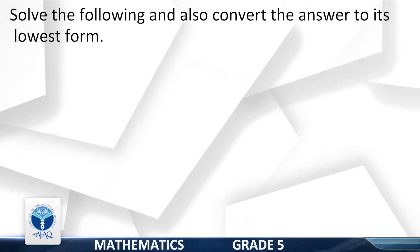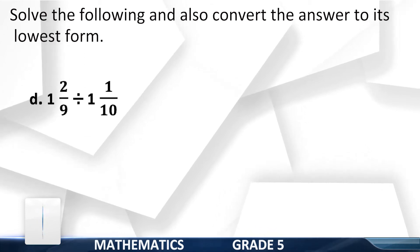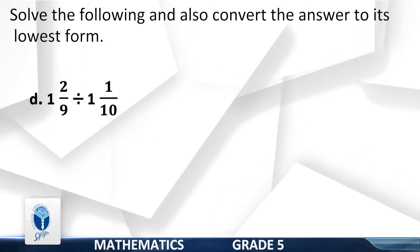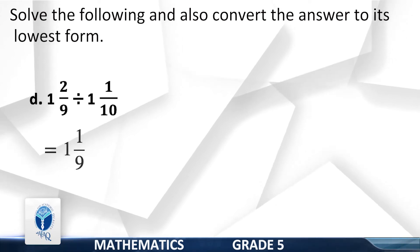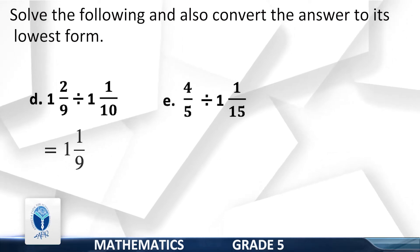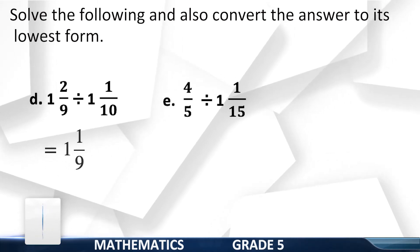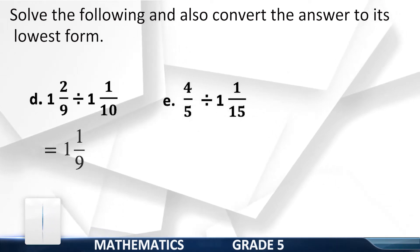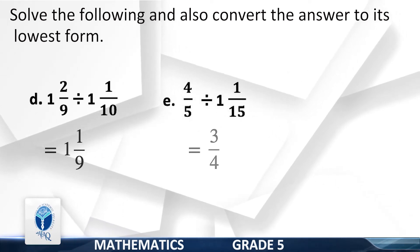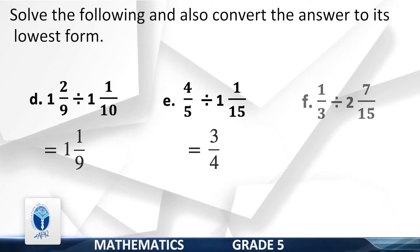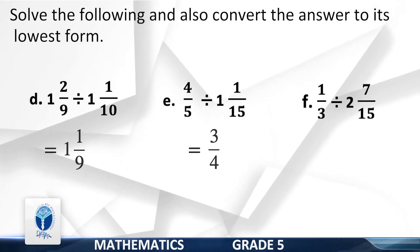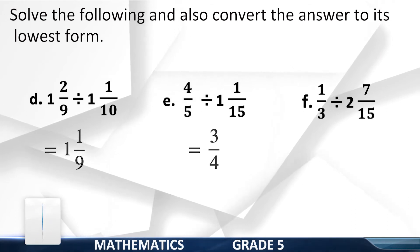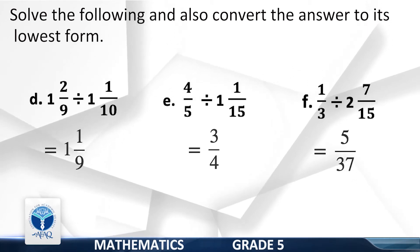D: 1 whole 2/9 divided by 1 whole 1/10 — your answer is 1 whole 1/9. E: 4/5 divided by 1 whole 1/15 — your answer is 3/4. F: 1/3 divided by 2 whole 7/15 — your answer is 5/37.